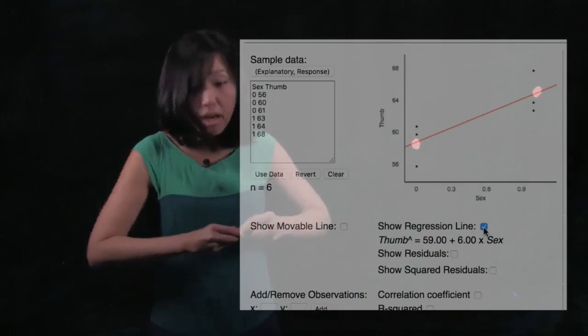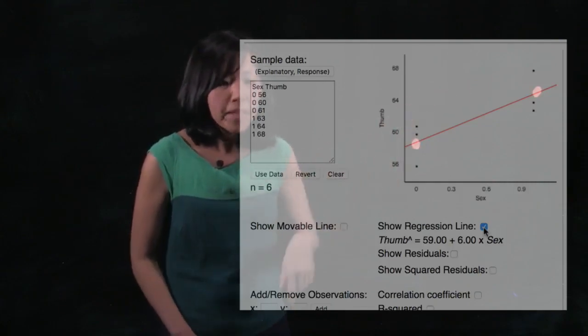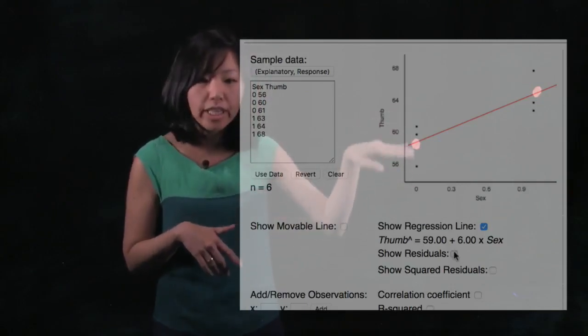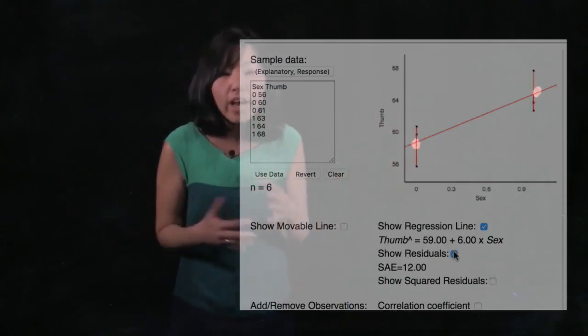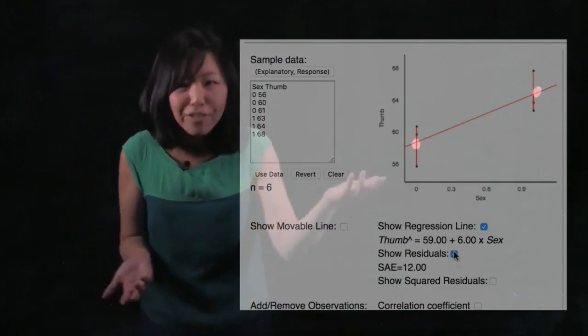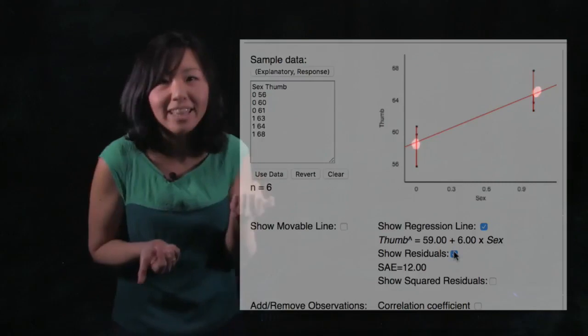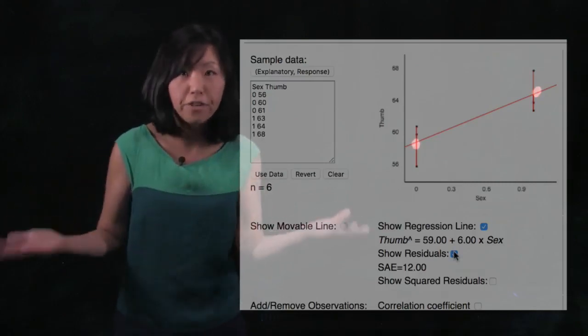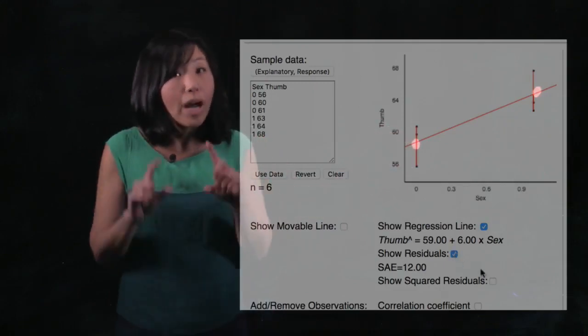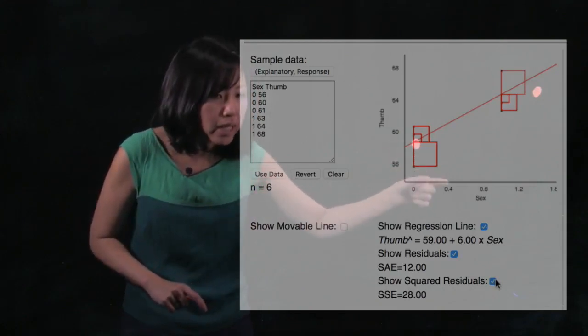All right, so now we see our little sex model shown to you in this red line. Now I'm going to show you the residuals off of this model. And these residuals are going to come off in red. And so it's going to say off of this new model, what are the errors? Because notice, none of our females actually have a thumb length of 59. None of our males actually have a thumb length of 65. So our model is just off for everybody. But here's how much it's off by. It's these little residuals right here. And now I'm going to square those residuals. So each little residual, I'm going to take that and make a square out of it.